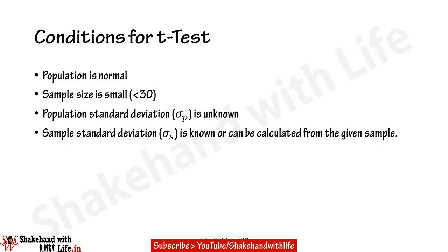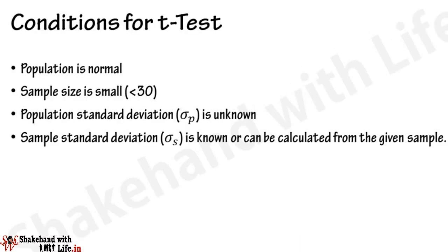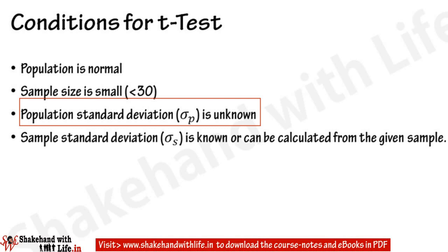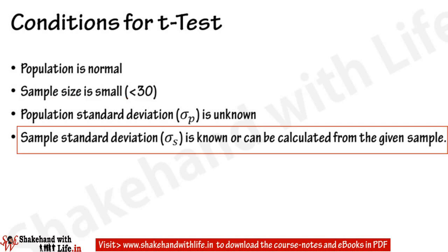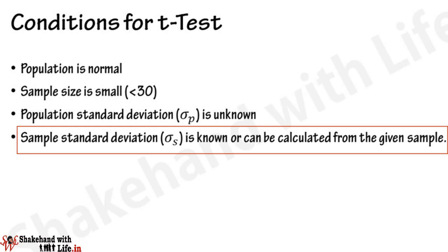First, study the T-test conditions for testing a null hypothesis for a given value of population mean. The T-test can be used when the population is normal, the sample size is small (less than 30), and the population standard deviation is unknown. Note that the population standard deviation is unknown, but the sample standard deviation is known or can be calculated from the given sample data.